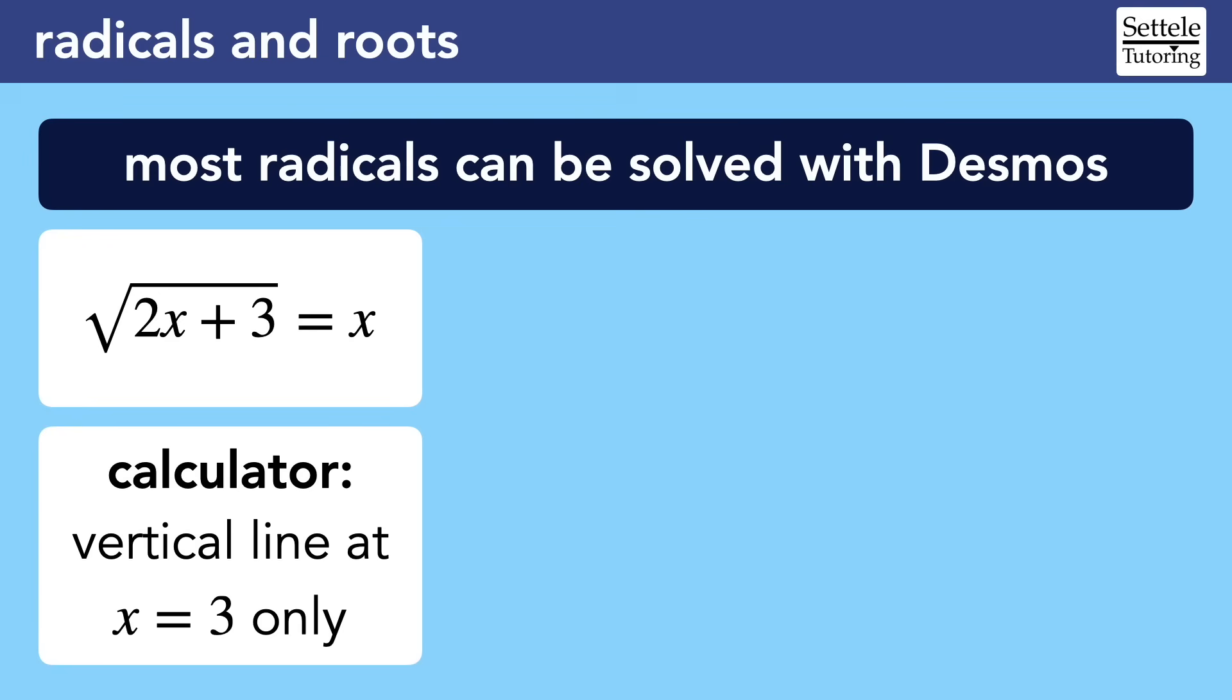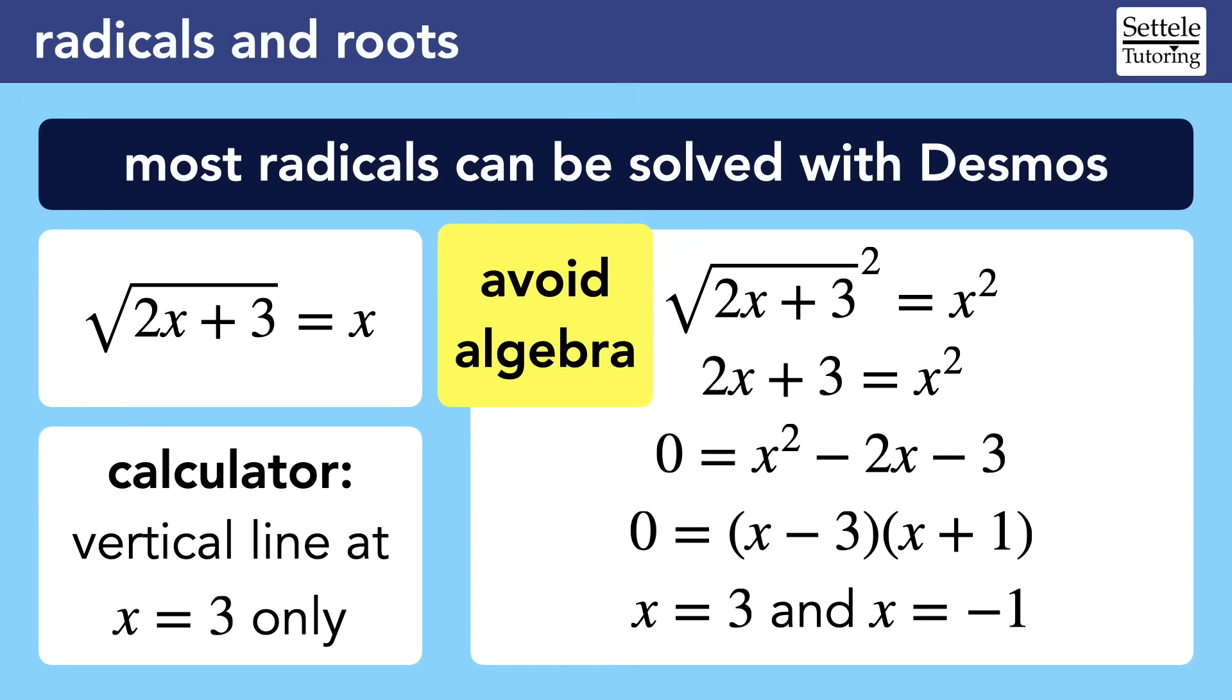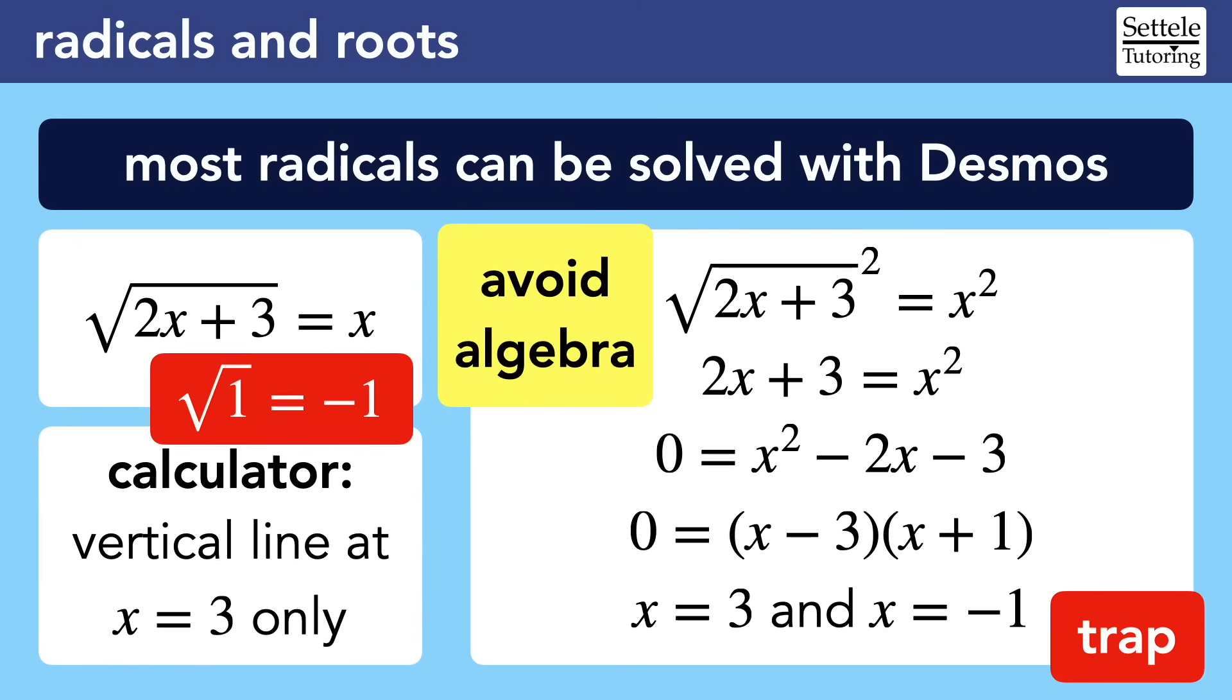Remember that the Desmos calculator can solve equations for us. If we type this one into Desmos, we'll quickly get our solution, which will look like a vertical line at x equals 3. The algebra way to solve this isn't too bad, but it's still messy, risky, and time-consuming. We'd square both sides, create a quadratic equal to 0, then factor, and solve. But be careful! There's a trap answer here. The algebra tells us that x can also equal negative 1, but that's not true. If we plug negative 1 back into the equation, we get that the square root of 1 is equal to negative 1. But we said earlier that the radical symbol only produces the positive root. Since positive 1 does not equal negative 1, this solution is actually wrong. This is what's known as an extraneous solution, and it's a big complication with radicals. Sometimes, even when we do all the algebra correctly, we end up with an answer that does not work in the original equation. In school, we would have to plug our answers into the original equation to check if they actually make sense. But on the SAT, all of this extra work and this potential trap can be avoided by simply using the Desmos calculator.